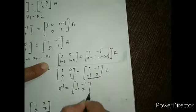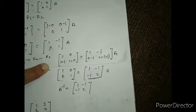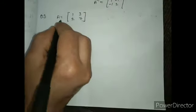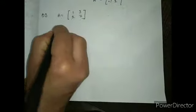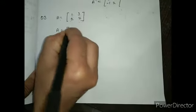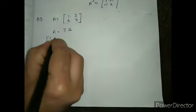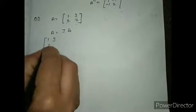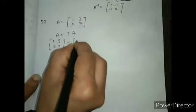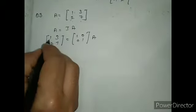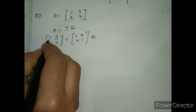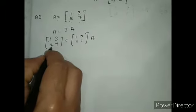Now come to the next question. Given that A is equal to [1, 3; 2, 7]. So we write A equal to I·A. A आपको given है [1, 3; 2, 7] और I है [1, 0; 0, 1], this is equal to A. Already 1 is given, so we don't need to change it. What we need to make is 0.